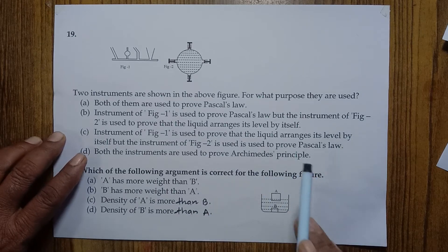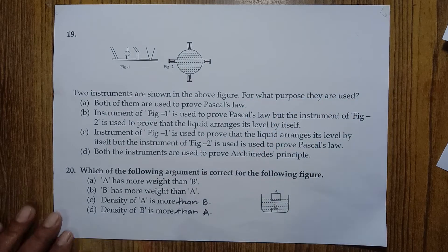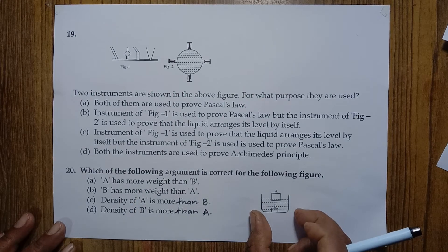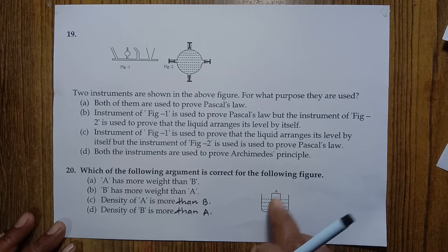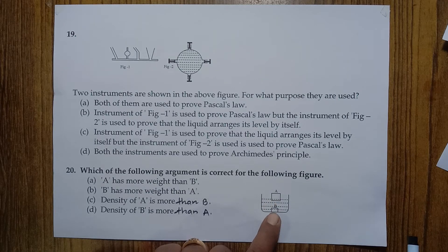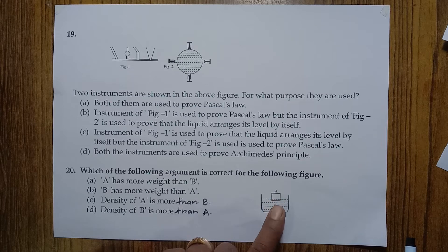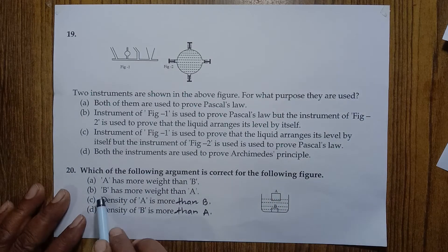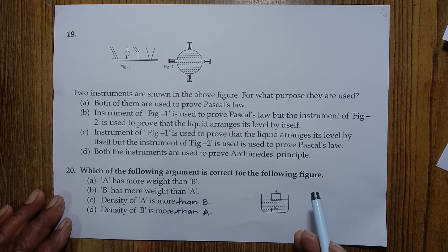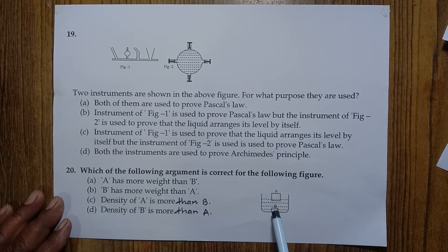The instrument in figure A is used to prove that liquid arranges itself at the same level — when liquid is poured into one tube it distributes throughout and the level remains the same in all tubes. The instrument in figure B is used to prove Pascal's law. Therefore, option C is correct. Option D — both instruments proving Archimedes' principle — is not correct.